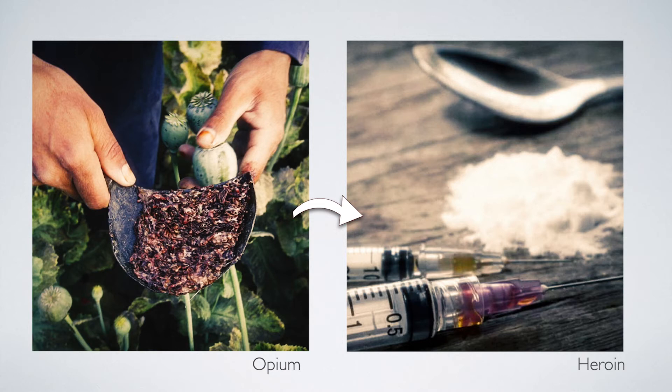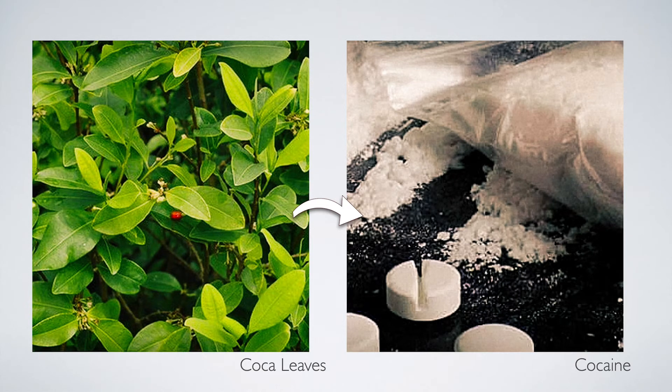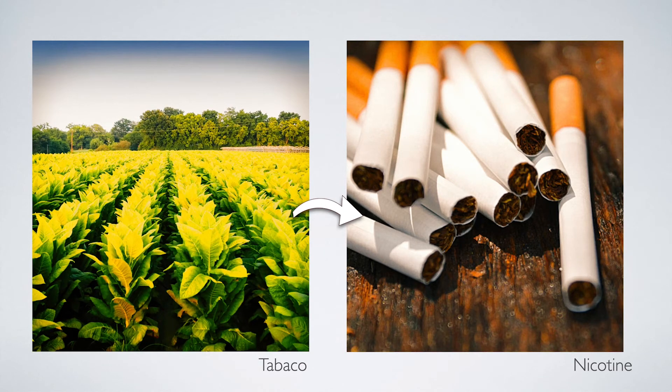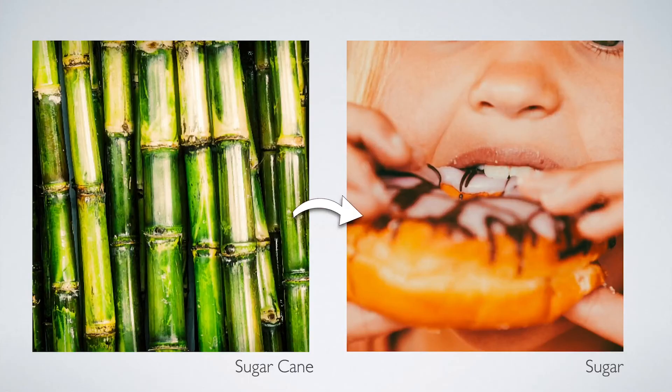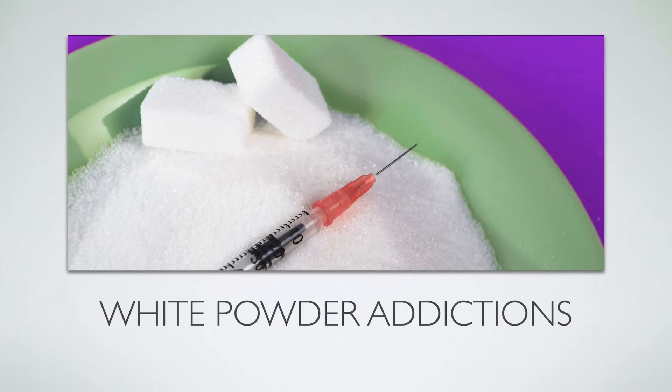We've seen this same pattern with other plant products: the poppy flower purified into heroin, a white powder causing significant addiction that also triggers the dopamine reward center; the cocoa plant and cocaine, which affects the same system; nicotine extracted from tobacco, put into cigarettes, causing a major health crisis of cancer and disease over the past century. And now we have the same thing — historically even earlier than any of these — the white powder that is crystalline sugar, the purified extract of sugarcane, causing an addiction that is completely legal yet causes enormous health consequences worldwide.